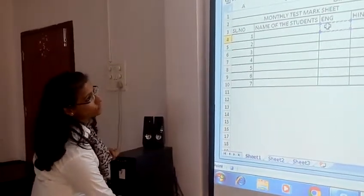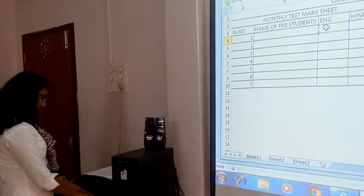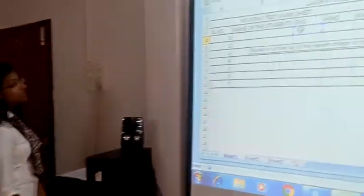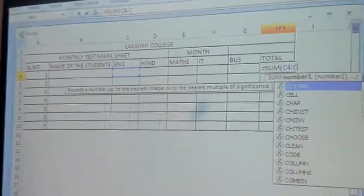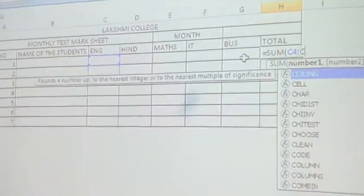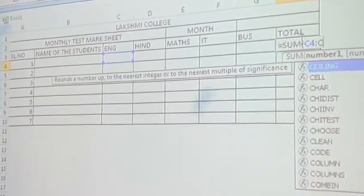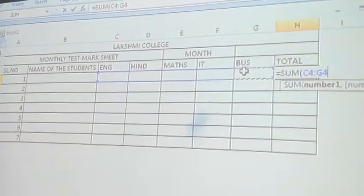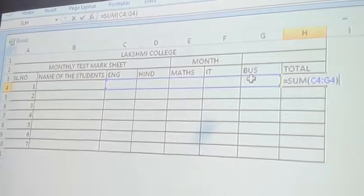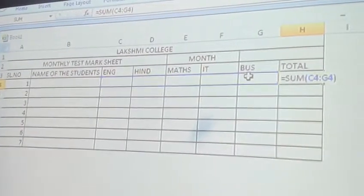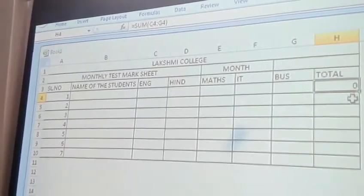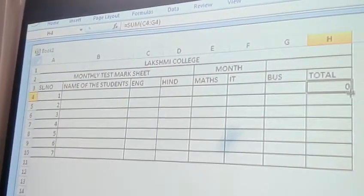And then we start with C here. Now, C4, okay? It's C4, okay? It's C4, C4, C4, 2, okay? That is the column, column, and S here. Just see, it's S here. G4, okay? G4. Fine? And then we have closed the bracket, okay? Now, enter.